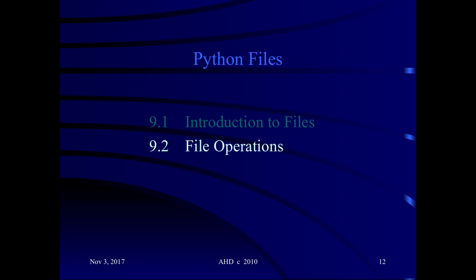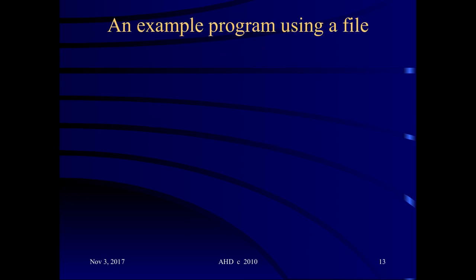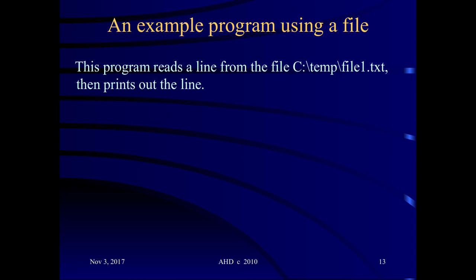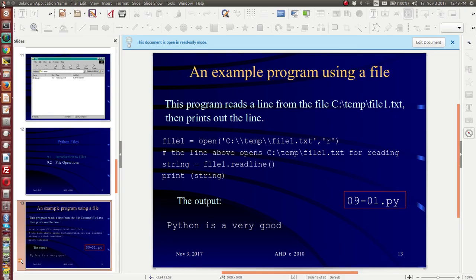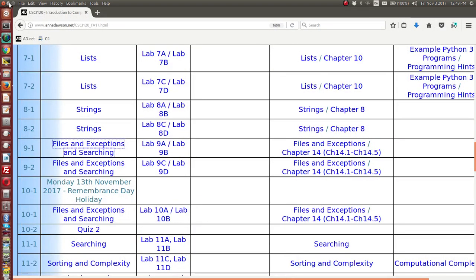I'll show you the next few screens, then I'll go to my desktop and show you my file, and create a Python program that will read the file. This particular example program is running on a Windows machine and is using the file called file1.txt, which is stored on the C drive in the slash temp folder. I'm going to simplify matters a little bit — I'm going to put my Python file and my text file both on the desktop. That way I don't need to specify a folder path when I'm opening my file.